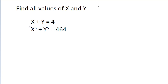In this video, we have given that x plus y is equal to 4 and x power 5 plus y power 5 is equal to 464. Then we have to find all values of x and y.